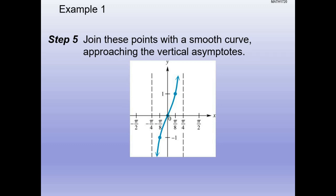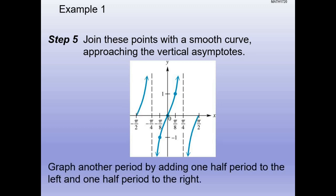Notice what happened to this graph. The parent function tan(x) has asymptotes at -pi/2 and pi/2. Tangent of 2x truncated and squeezed it in to -pi/4 and pi/4. It's always a good tendency to graph at least 2 periods worth. Since we know how the original graph grows and it's a repetitive sinusoidal pattern, we can follow the pattern to graph the additional sections.